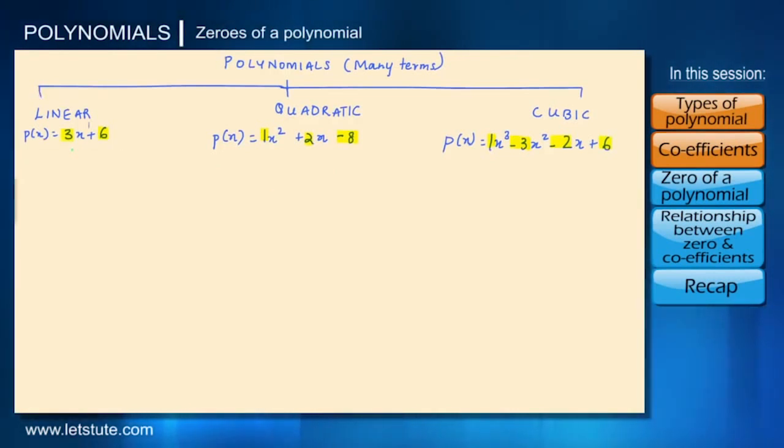The highest power for 3x plus 6 is 1 therefore it is a linear polynomial. The highest power here is 2 therefore it is a quadratic polynomial and the highest power here is 3 therefore it is a cubic polynomial.